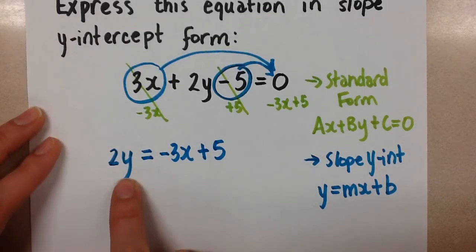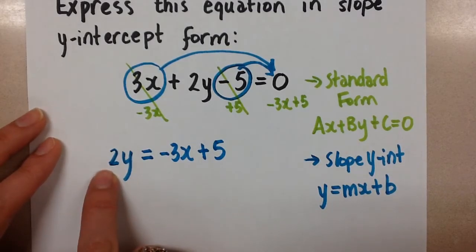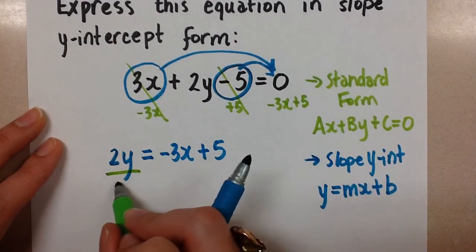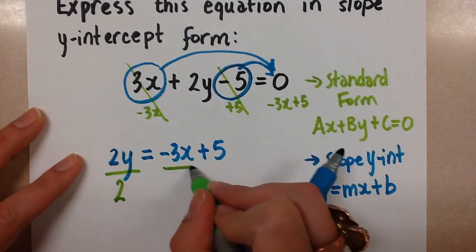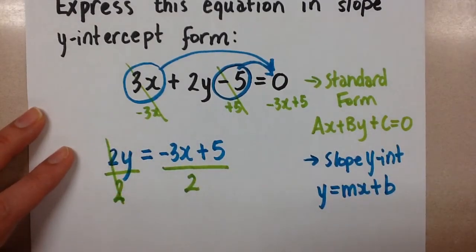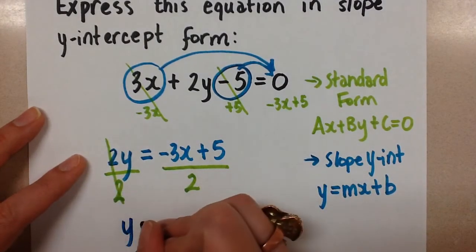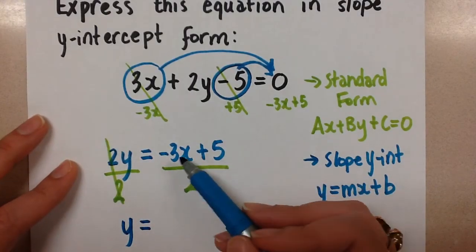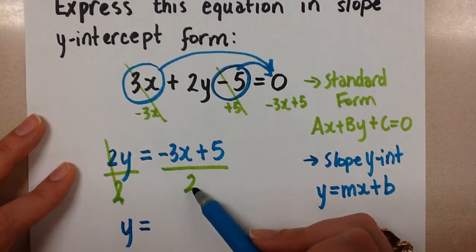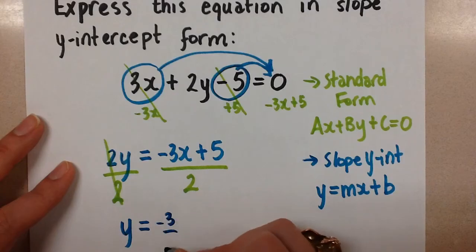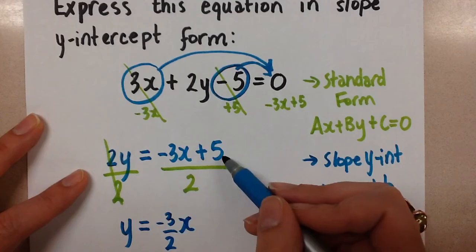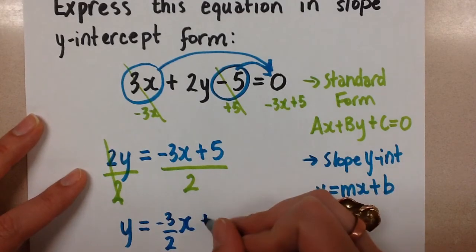But the y here is not isolated just yet. It still has the times 2 attached to it. So we're going to divide by 2 to get it by itself. But if we divide on one side by 2, we have to also divide on the other side by 2. So the 2s on the left will cancel, as we know. And we'll be left with y equals, on the right-hand side, we have to divide by 2 on both of these terms. So we'll do the negative 3 divided by 2. Let's leave it as a fraction right now. And then the x is attached, plus 5 divided by 2. Let's leave that as a fraction as well.